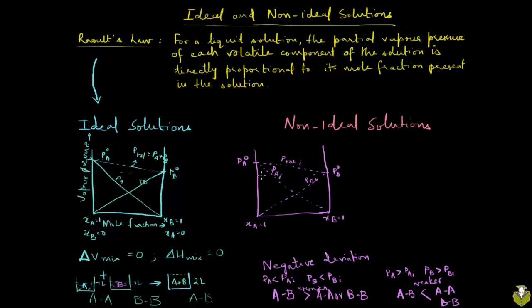PA, the actual PA for this real solution, is going to be lower. It follows a curve like that. The shape of the curve is going to depend on the type of components involved. And then PB is again going to be lower. Similarly, when you add up these two pressures, you get the total pressure and that is also going to be lower. This is what you get for a negative deviation from Raoult's law.